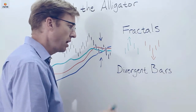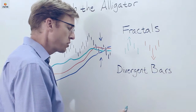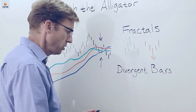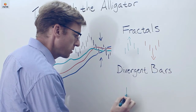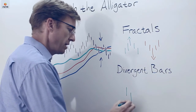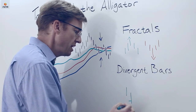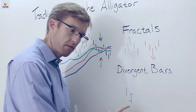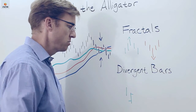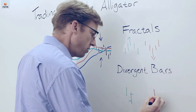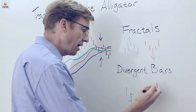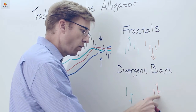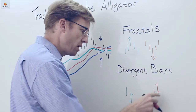Divergent bars are similar in concept but we're going to be using them differently. For a bullish divergent bar, we start with a bar that goes down and then a second bar that does have a lower low. It doesn't really matter where that bar opened, but what we want to see is the close in the upper 50 percent of that bar. A bearish divergent bar is the mirror image — a bar appears and then a second one with a higher high, with the close in the lower 50 percent of that bar.